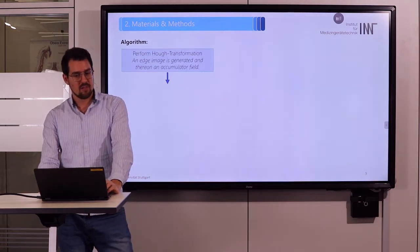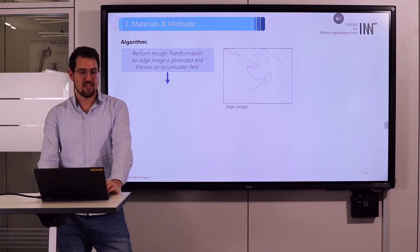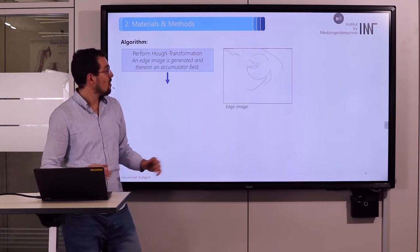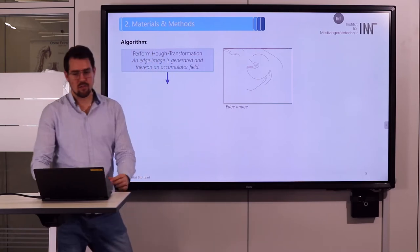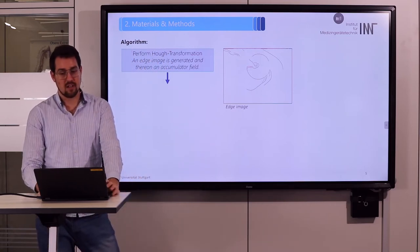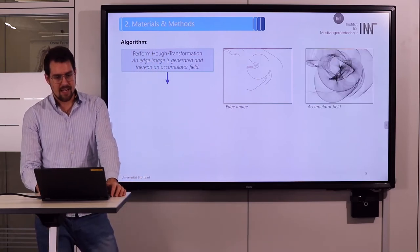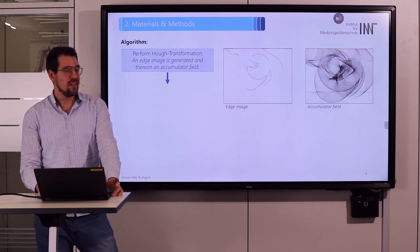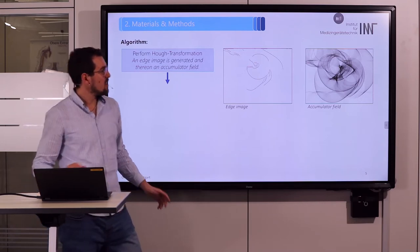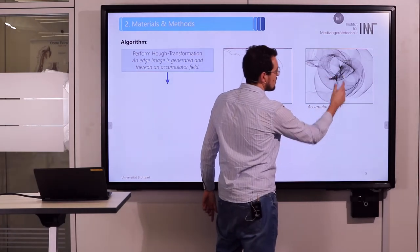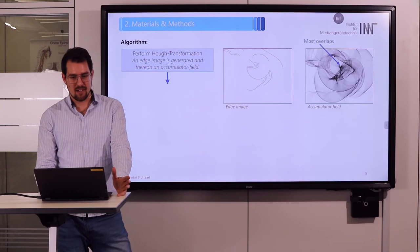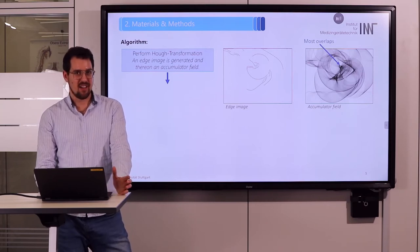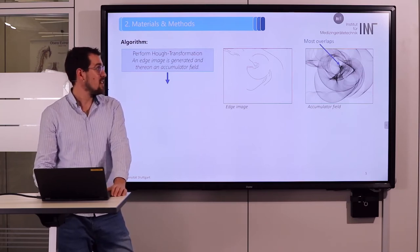For this purpose an edge image is generated. On each of these edge points we draw another circle and store it into a cumulative field. In this field there are overlaps, which you can see as darker areas. At the point where the most overlaps are is actually our searched circle center.